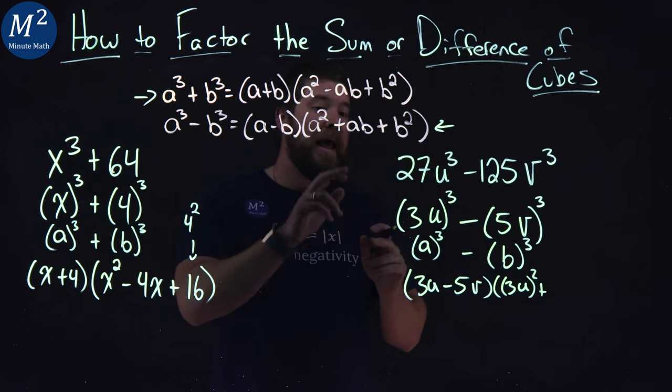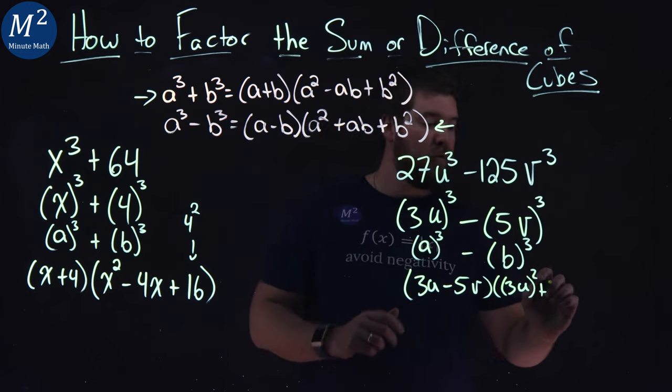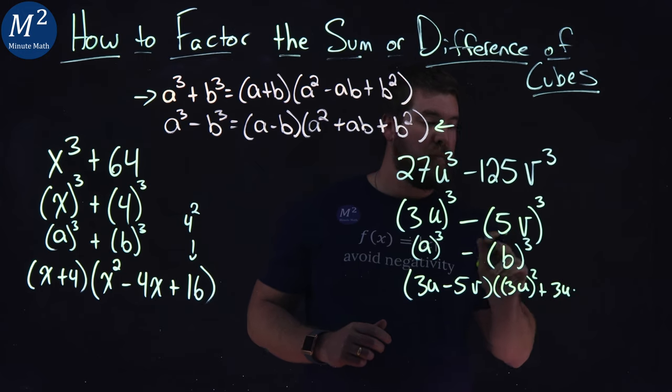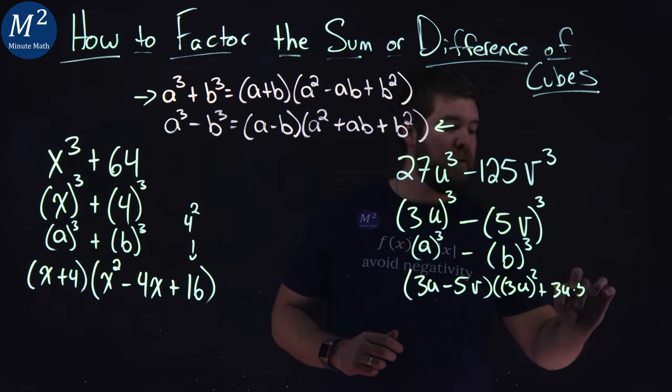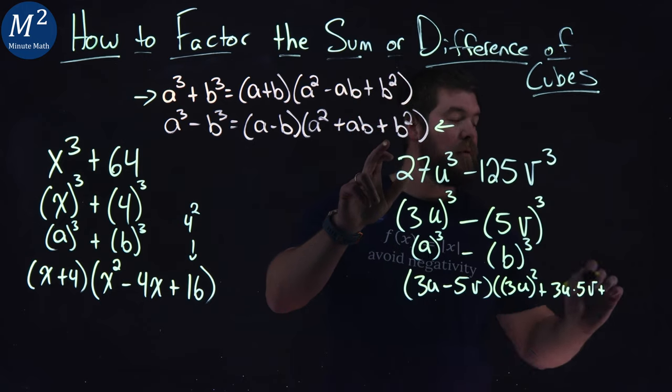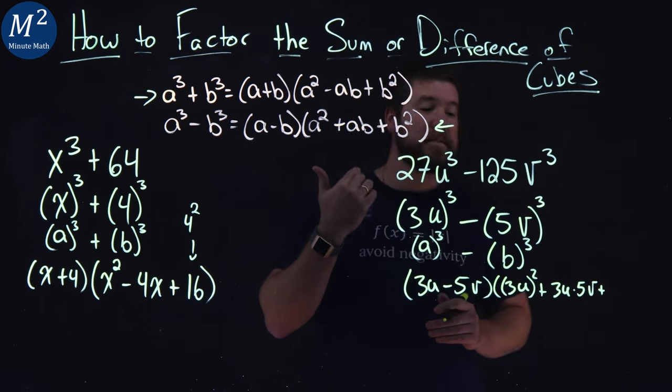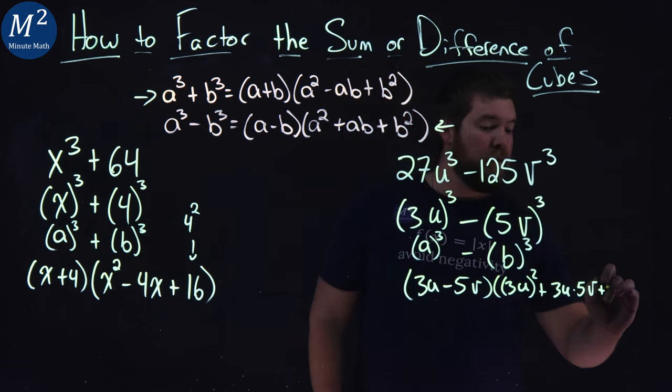Plus an a b. Right. So a value is 3u times a b value which is 5v, plus I still have some room here, B squared. Our b value being 5v all squared.